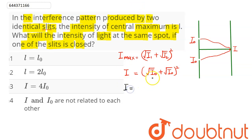This equals 4 × i₀. So we can see here that I = (2√i₀)², hence I value comes out to be 4i₀.